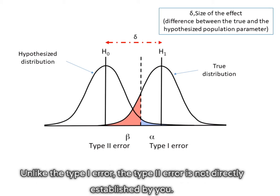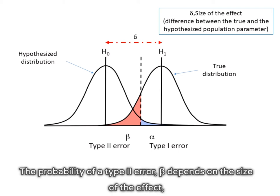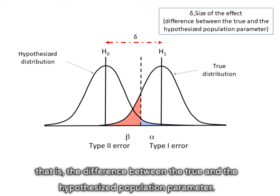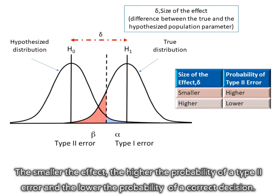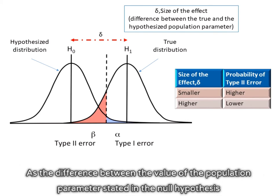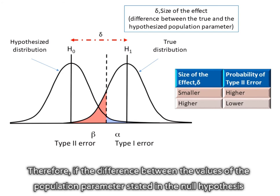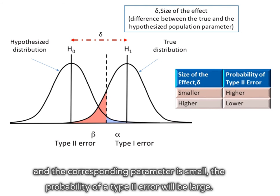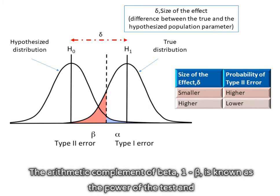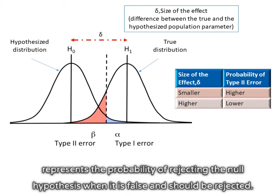Unlike the type 1 error, the type 2 error is not directly established by you. The probability of a type 2 error, beta, depends on the size of the effect — that is, the difference between the true and the hypothesized population parameter. The smaller the effect, the higher the probability of a type 2 error and the lower the probability of a correct decision. As the difference between the value of the population parameter stated in the null hypothesis and its corresponding population parameter increases, the probability of a type 2 error decreases. Therefore, if the difference between the value of the null hypothesis and the corresponding parameter is small, the probability of a type 2 error will be large. The arithmetic complement of beta, 1 minus beta, is known as the power of the test and represents the probability of rejecting the null hypothesis when it is false and should be rejected.